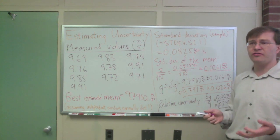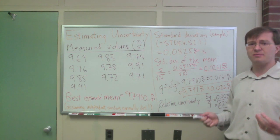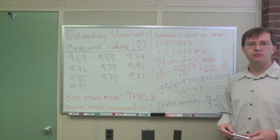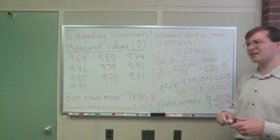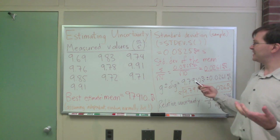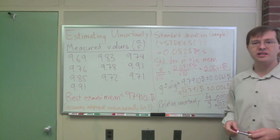Honestly, when I get much more than five or ten data points, I start worrying that there are systematic errors I haven't accounted for more than the random error being the dominant thing in that case. So take five to ten data points and call it good. With that, that's all I want to tell you about how to estimate uncertainty in a set of measurements.